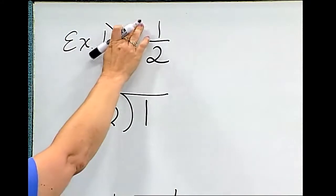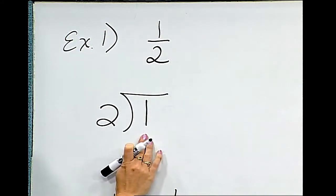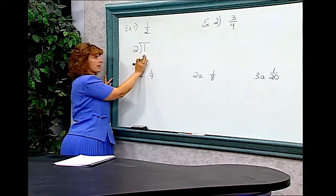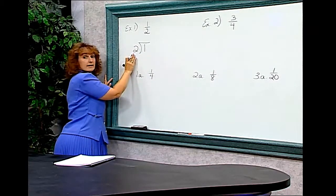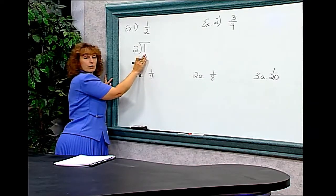The numerator, the top number, always goes inside the division bar. That's an important thing to remember. We cannot divide 2 into 1. 1 is too small.